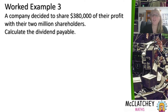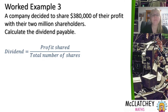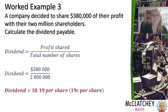In worked example three, a company decides to share $380,000 of their profit with their 2 million shareholders. Calculate the dividend payable. Using the formula — total profit to be shared divided by total number of shares — it's important to note that companies don't have to share all their profit. In this case, all of it is shared. So $380,000 divided by 2 million gives a dividend of 19 cents per share, which can be presented either as $0.19 or as 19 cents.